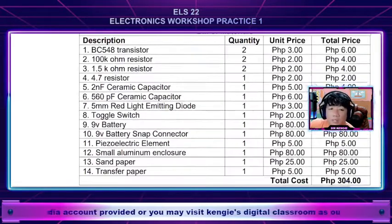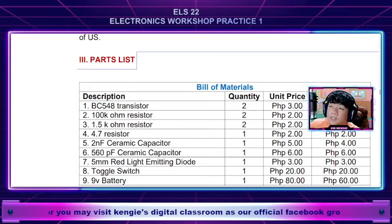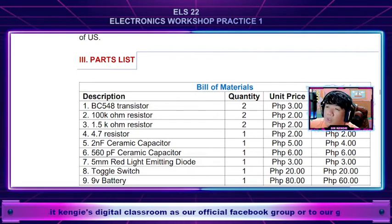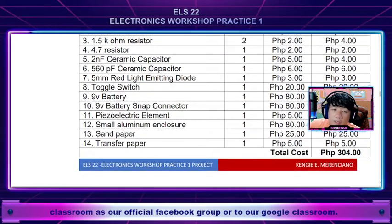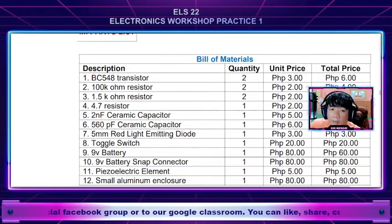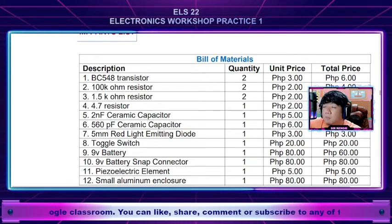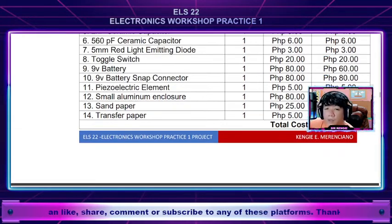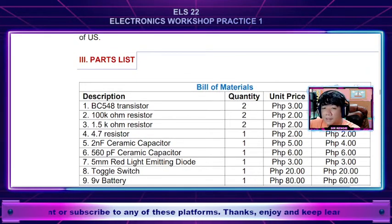The next part is the bill of materials or the parts list. Here you're going to present the different components or materials that you used to build this project. For example, this project costs around 200 to 304 pesos. The format includes: description, type of transistor or resistor used, quantity, unit price, and total price. That is the content of the bill of materials and parts list.